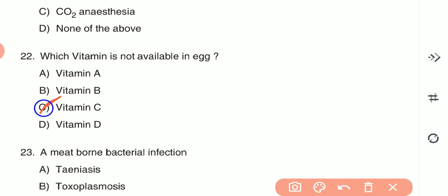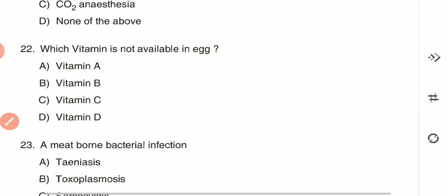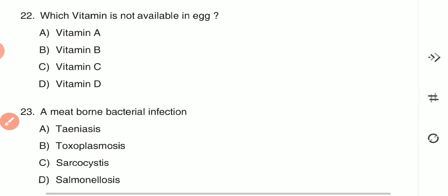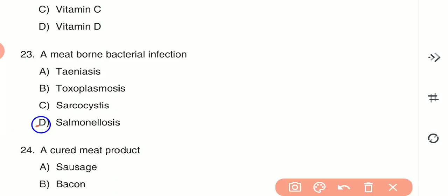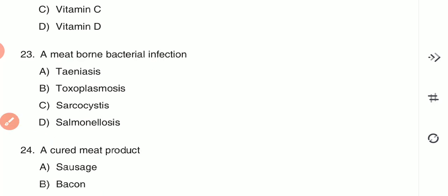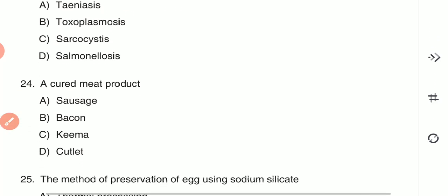Question 23: A meat-borne bacterial infection is known as — (A) teniasis, (B) toxoplasmosis, (C) sarcosystis, or (D) salmonellosis. Salmonellosis, caused by Salmonella species, is the meat-borne bacterial infection — option D is the correct answer.